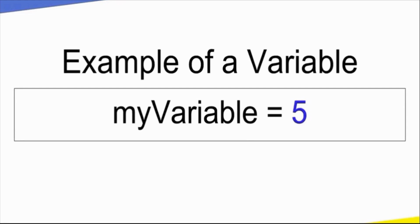The variable name is equal to the value. Now we will assign a variable name. The equal-to symbol is very important — it represents assignment. Assignment means we store a value at the variable name in the memory location. That is the meaning of the equal-to symbol.